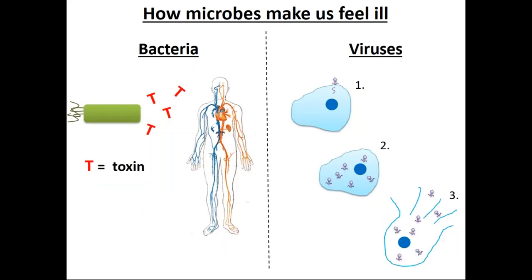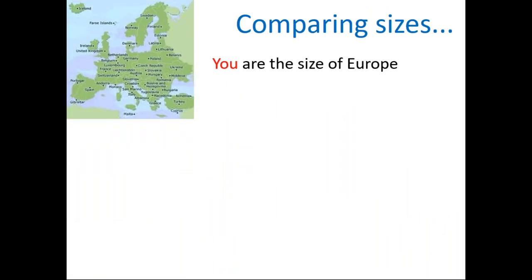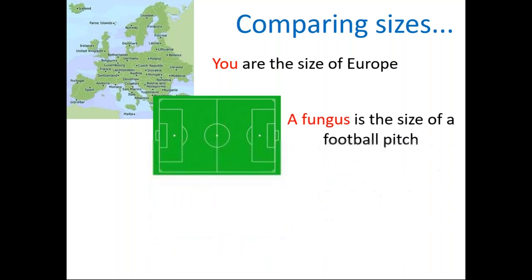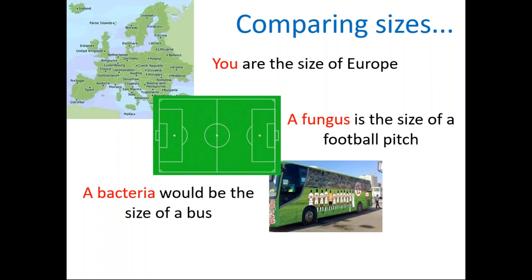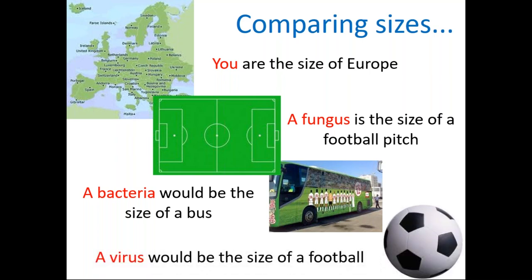Here are bacteria and viruses and how they work. In the case of bacteria, they release toxins, which makes us feel ill. In the case of viruses, they insert into the cell and release their genetic information, bursting the cell. If we compare the size of viruses and bacteria: using your rat as a reference size, a fungus would be the size of a football, bacteria would be the size of a vase, and the smallest — a virus — would be the size of a football.